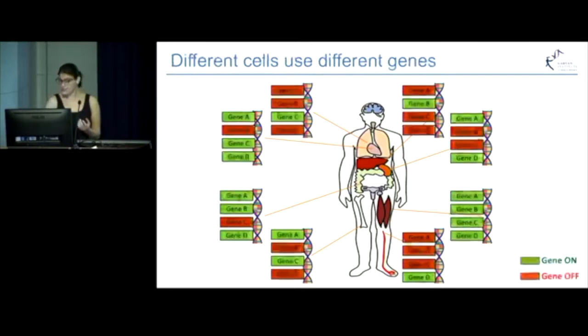But not every cell uses every single gene. For example, there are certain genes that you need to make your heart beat, so these will be switched on in your heart cells but switched off in every other cell type. The pattern of genes that are turned on and off gives each cell its function.